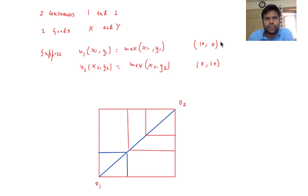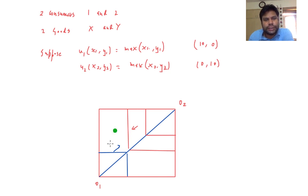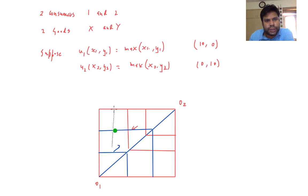Individual 2's satisfaction level increases in this direction, and individual 1's satisfaction level increases in this direction. We can do some inspection to figure out what is efficient and what is not. Any allocation inside the box is not efficient. For example, consider this point — it is not efficient because if you draw the indifference curve of consumer 1 through this point and the indifference curve of individual 2 through this point, we can see that moving in this direction improves the satisfaction level of both.